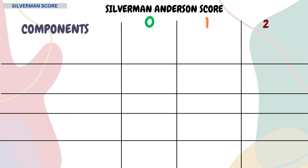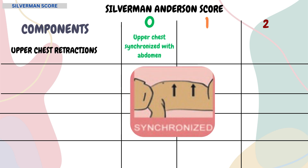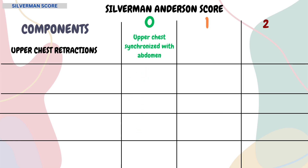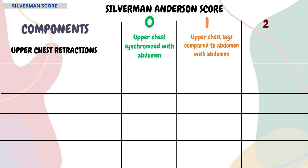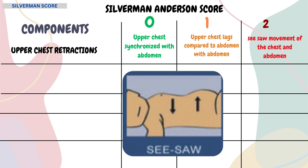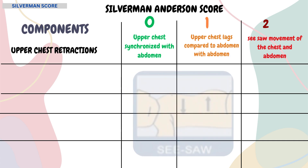The first component is upper chest retractions. If the upper chest synchronizes with the abdomen, a score of 0 is given. If the upper chest lags compared to the abdomen, a score of 1 is given. If there is a seesaw movement of the chest and abdomen, a score of 2 is given.